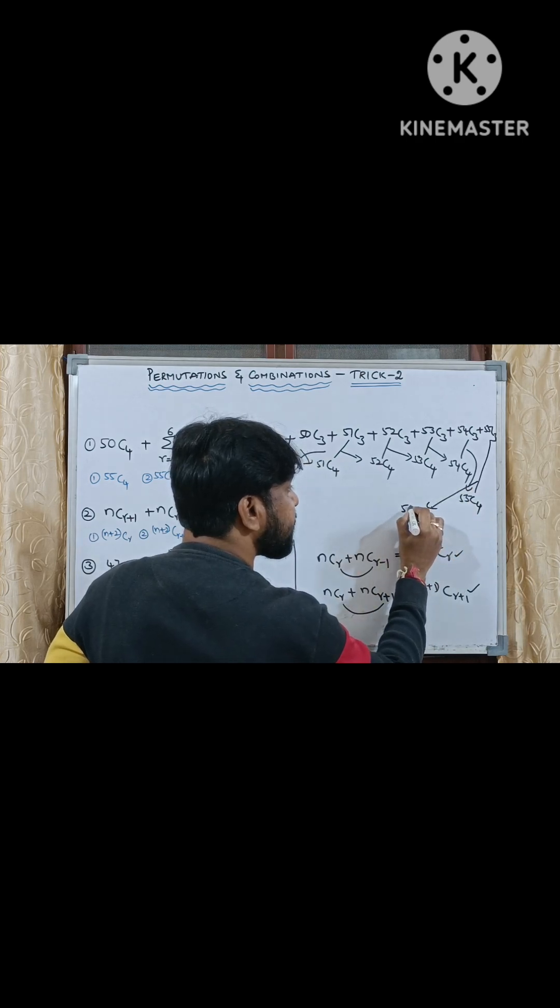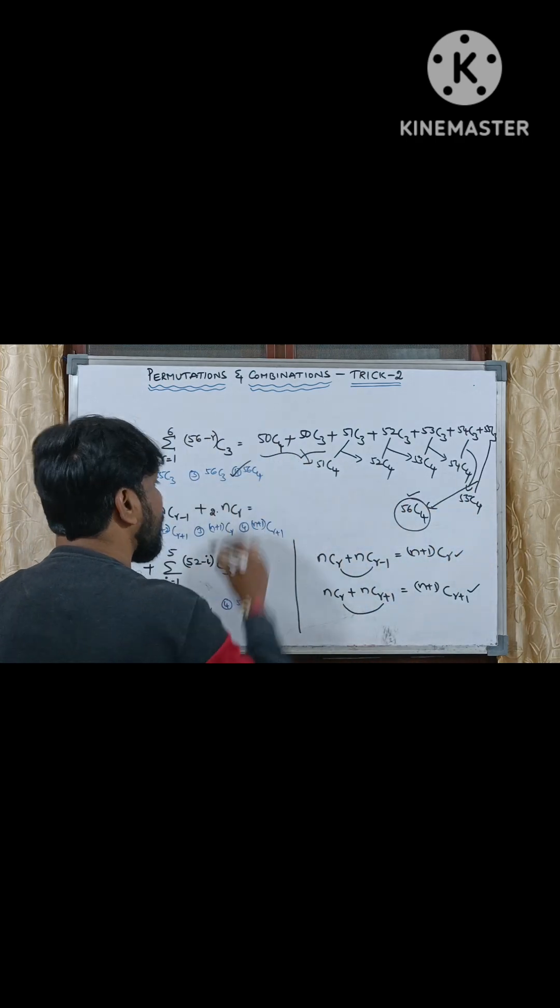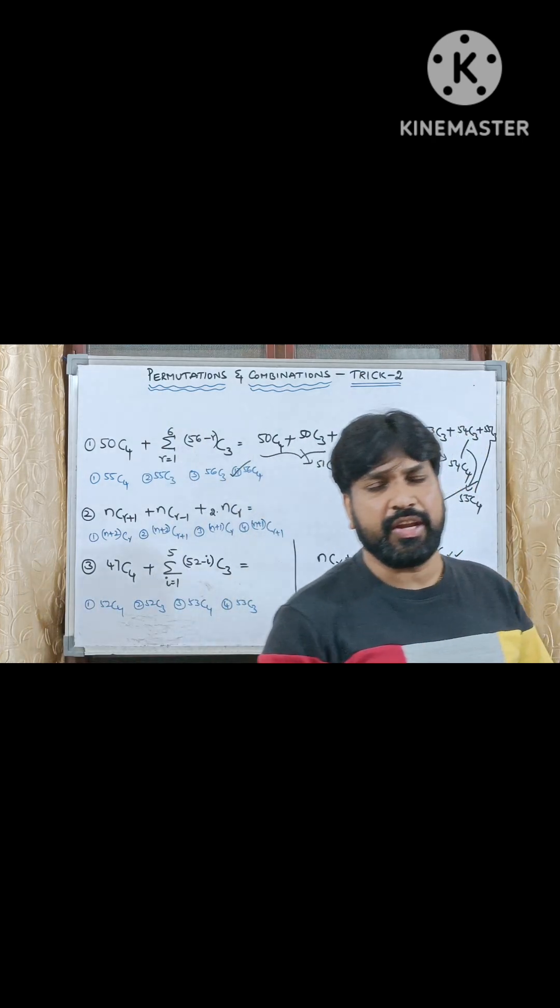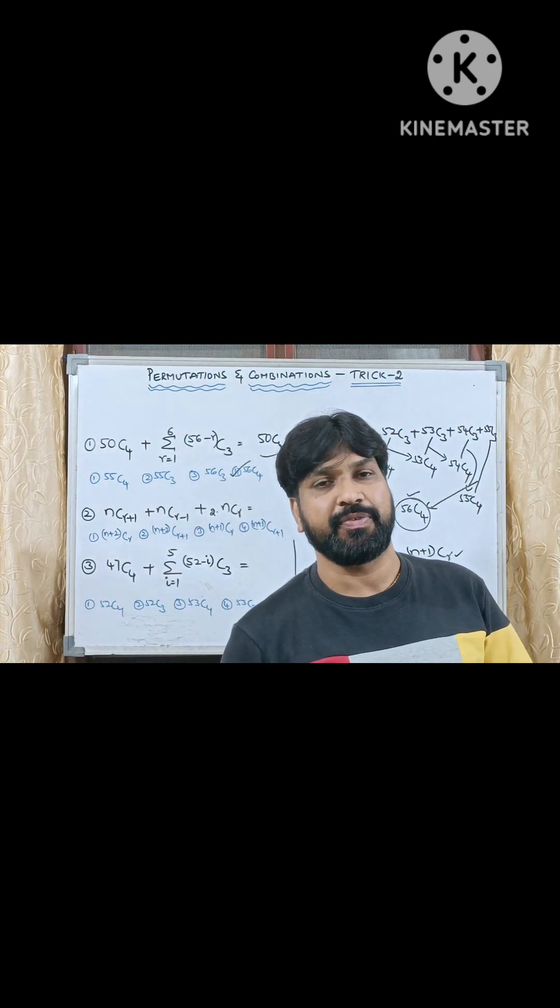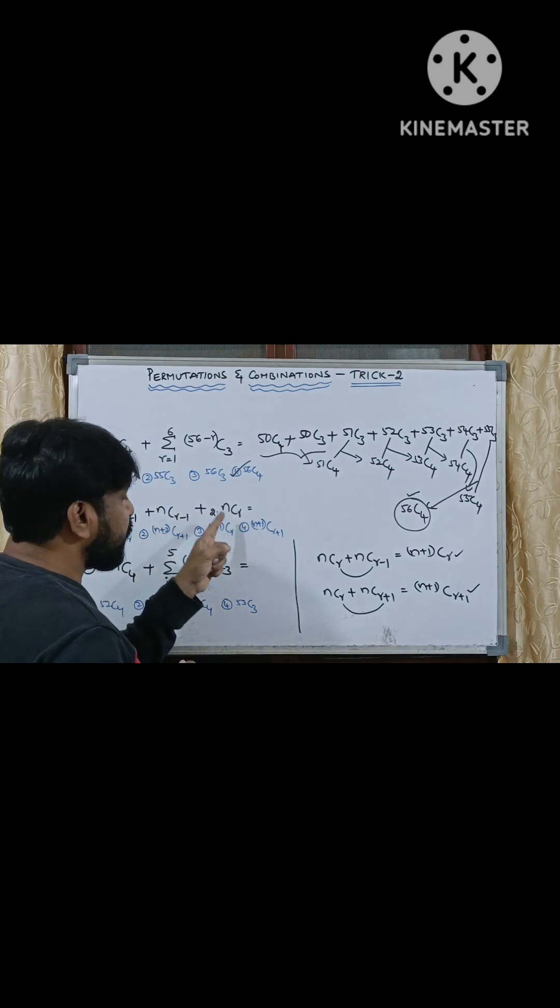Finally you are getting 56C4 as the final answer. So 56C4 means option 4 is the correct answer. By using this technique it's very easy to simplify this kind of sums. Let us move to next sum. NCR plus 1 plus NCR minus 1 plus 2 times of NCR.